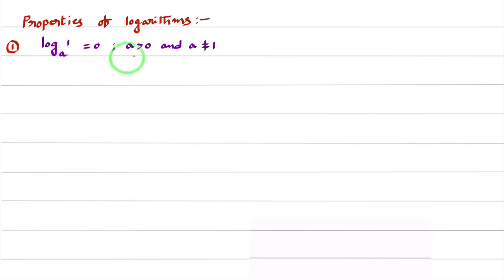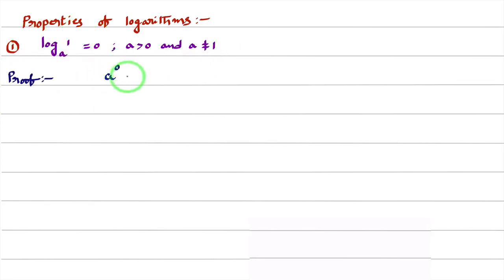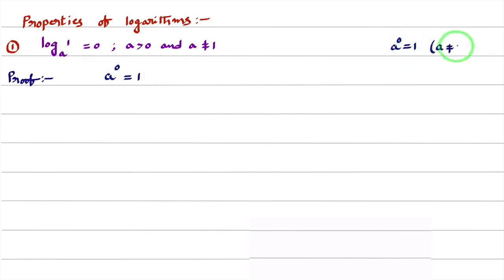Here, A is a positive number and A is not equal to 1. This result holds good when A is greater than 0 and A is not equal to 1. We will now see the proof of this result. From the law of indices, we know the formula: A power 0 equals 1. We learned this in laws of indices.